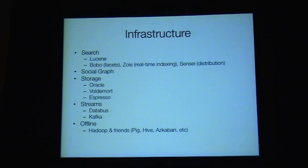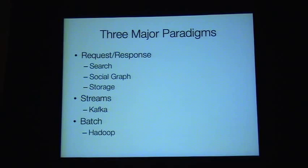Then you have streams, which glue everything together — how data gets between all these systems, and how activity data about what people are doing gets captured. At the very back you have the offline system for big crunching, which for us is Hadoop. We started with a centralized data warehouse and have been slowly moving everything to Hadoop — starting with all the batch computing, and now a lot of recommendations are done there as well.